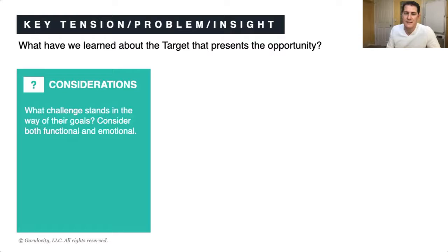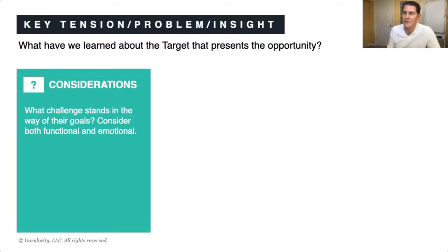Some things to consider: are there any challenges that stand in the way of them reaching their goals? This obviously requires some sort of knowledge about them — some sort of research you've done in understanding what their motivations and goals are. And then from there, thinking about what's in their way, what stands in their way, or what limits them from achieving that. And it can be functional or emotional.